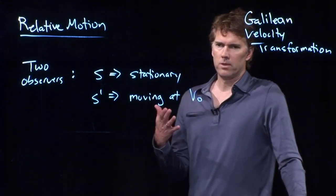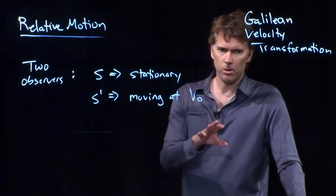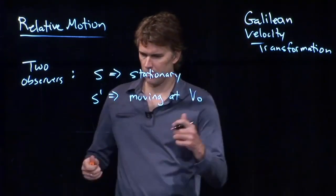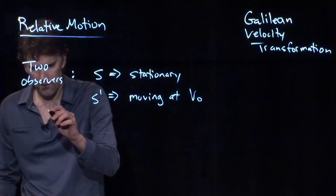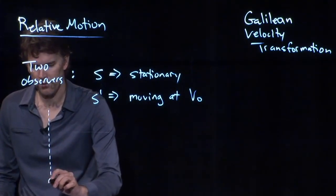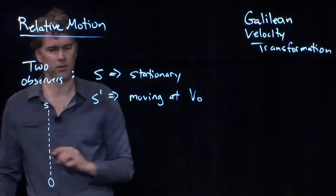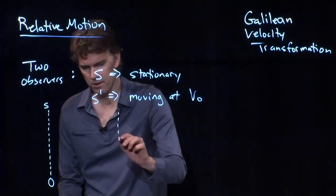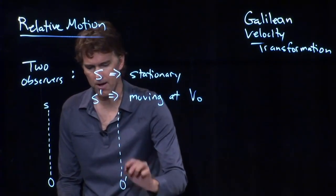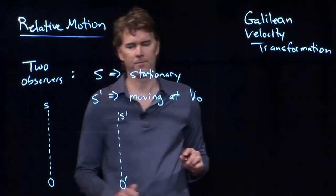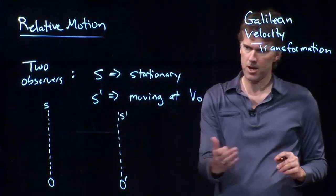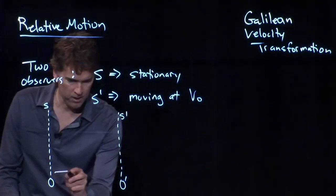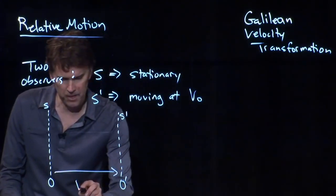All right. How can we make sense of what you observed versus what I observed? Well, the way we do it is the following. Let's draw an origin for the S frame. And let's draw a different origin for the S prime frame. All right. And we know that the S prime frame is moving along relative to the S frame. And it's in fact moving at speed V naught.